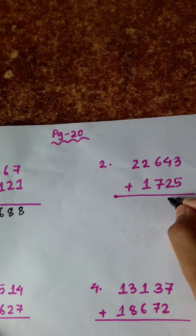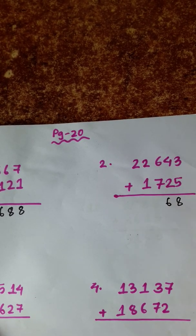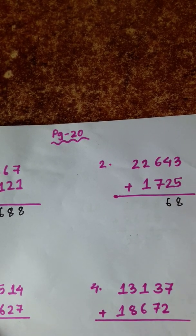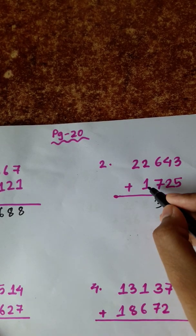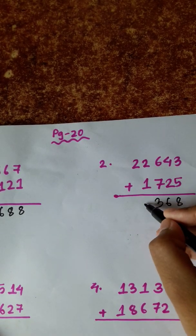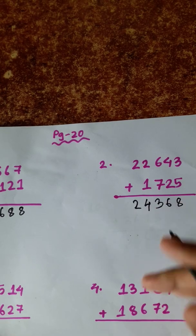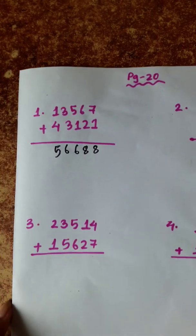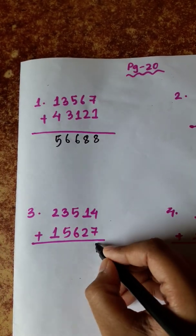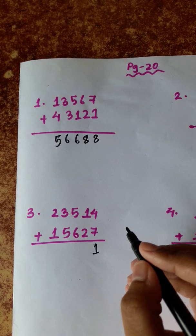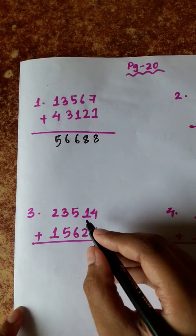4 plus 2 is 6. 7 plus 6: 8, 9, 10, 11, 12, 13. Then 1 plus 1 is 2, plus 2 is 4. Then 2, 7 plus 4 is 11. And 11, 13. Then 2, then 11, 12, 13.